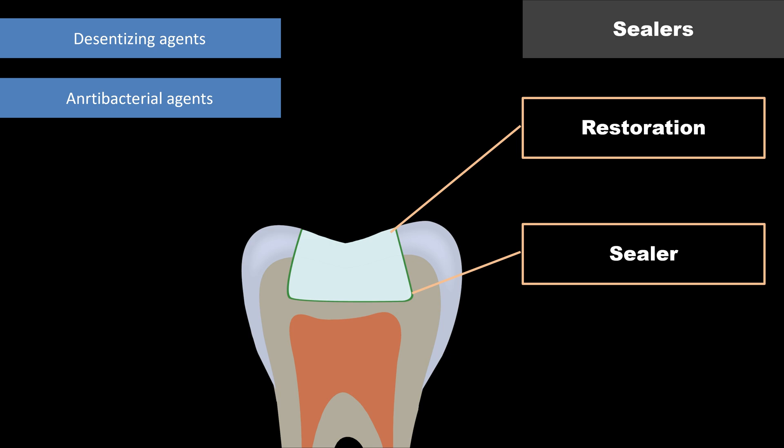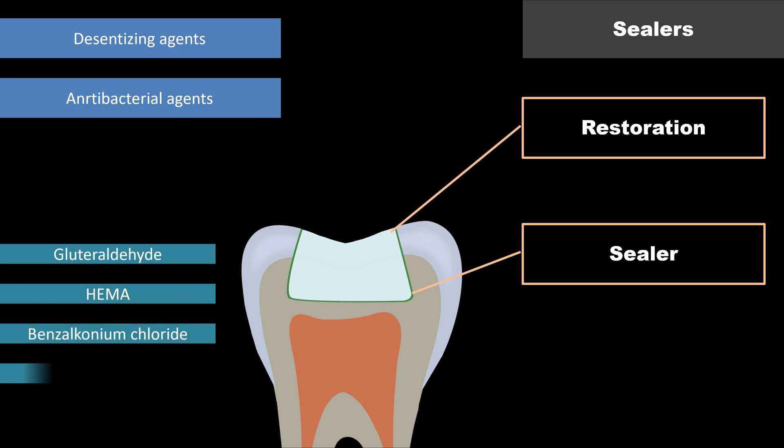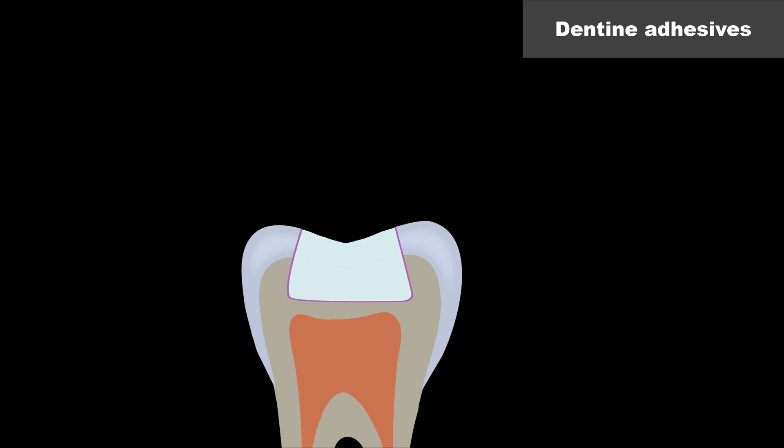There is also a group of materials called sealers, applied over fresh cavity preparations. They act as desensitizing and antibacterial agents. Common examples include glutaraldehyde-HEMA (hydroxyethyl methacrylate), benzalkonium chloride, and chlorhexidine. These agents provide a desensitizing effect and are especially useful for deep caries or cervical abrasions to minimize postoperative sensitivity.